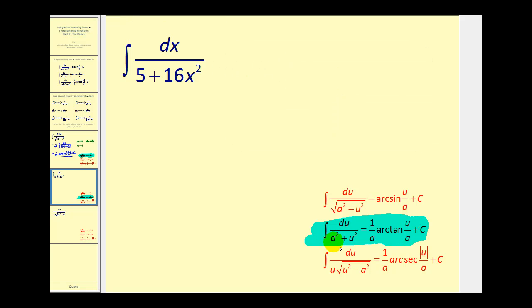Let's go ahead and see if we can identify the values of a and u by making this fit the pattern. So our denominator needs to be a squared plus u squared. Well, if we let a squared equals five, that means a would be the square root of five. So we can rewrite this as the square root of five squared plus, for u squared, if u squared is equal to sixteen x squared, u would be four x. So if we square four x, we will get sixteen x squared. So this tells us that a is equal to the square root of five and u is equal to four x.